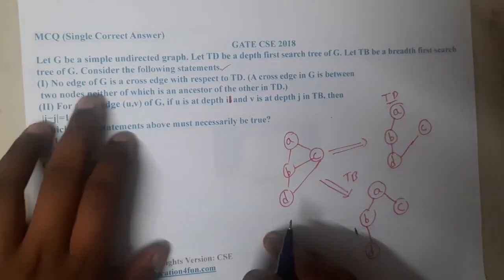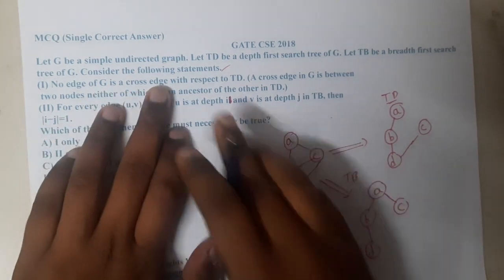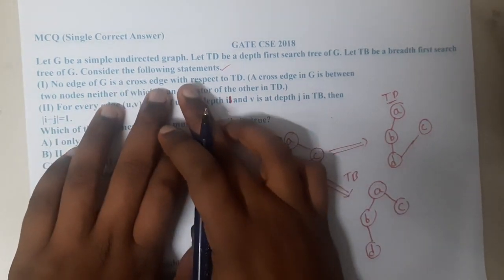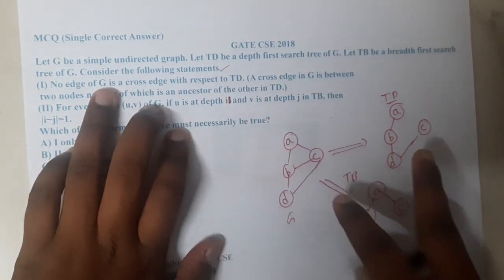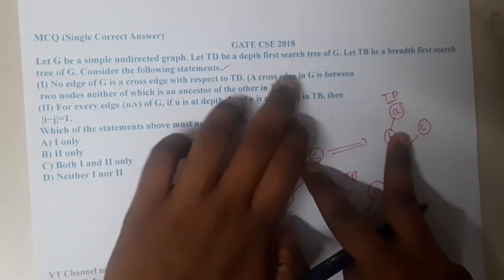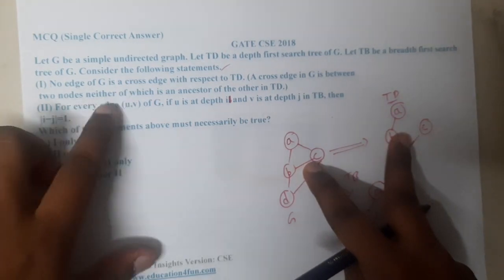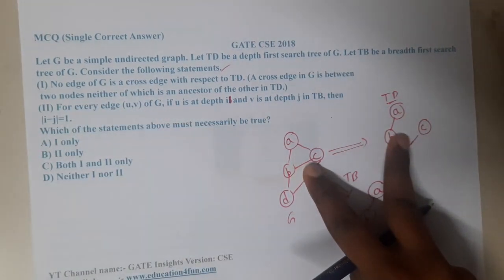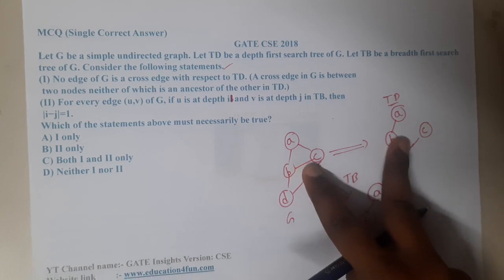The question now is: no edge of graph G is a cross edge with respect to TD. This is a comparison between graph G and TD. A cross edge in graph G is between two nodes neither of which is an ancestor of the other in TD.